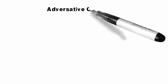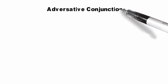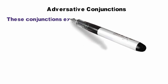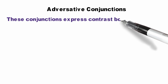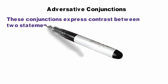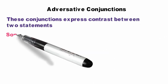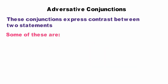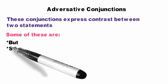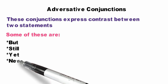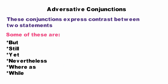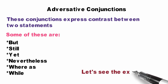Next is adversative conjunctions. These are a bit interesting as well. These conjunctions express contrast between two statements — two opposing ideas. Some adversative conjunctions are: but, still, yet, nevertheless, whereas, while, however, etc. Let us see some examples.